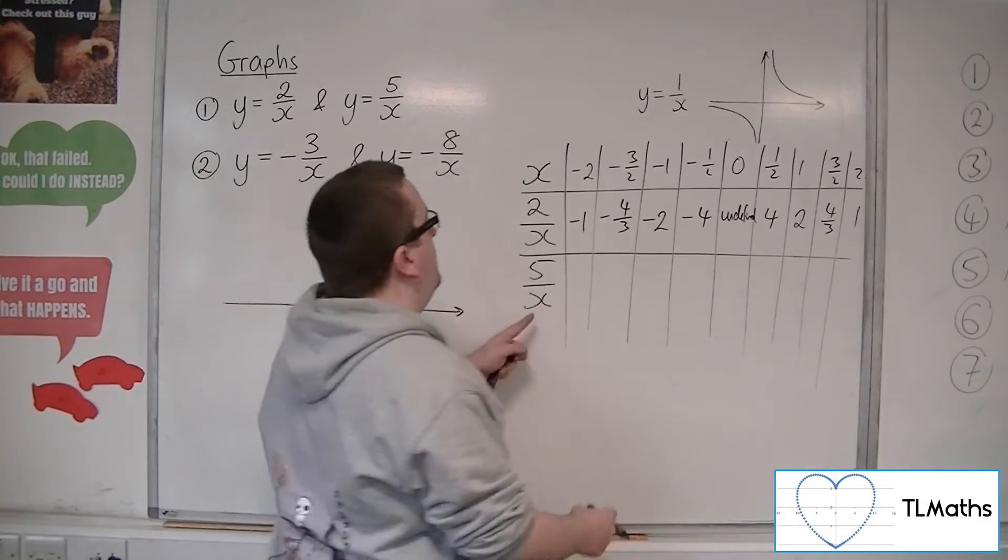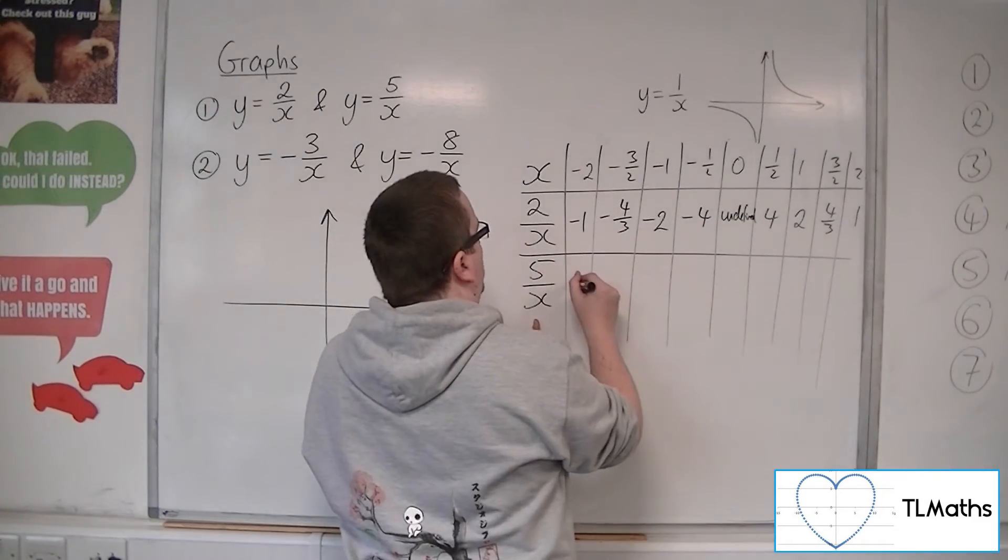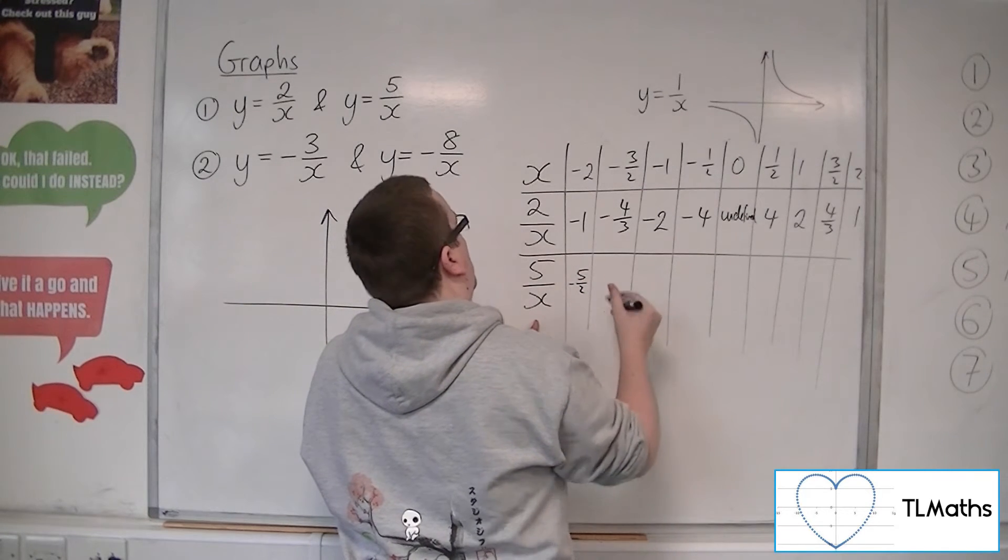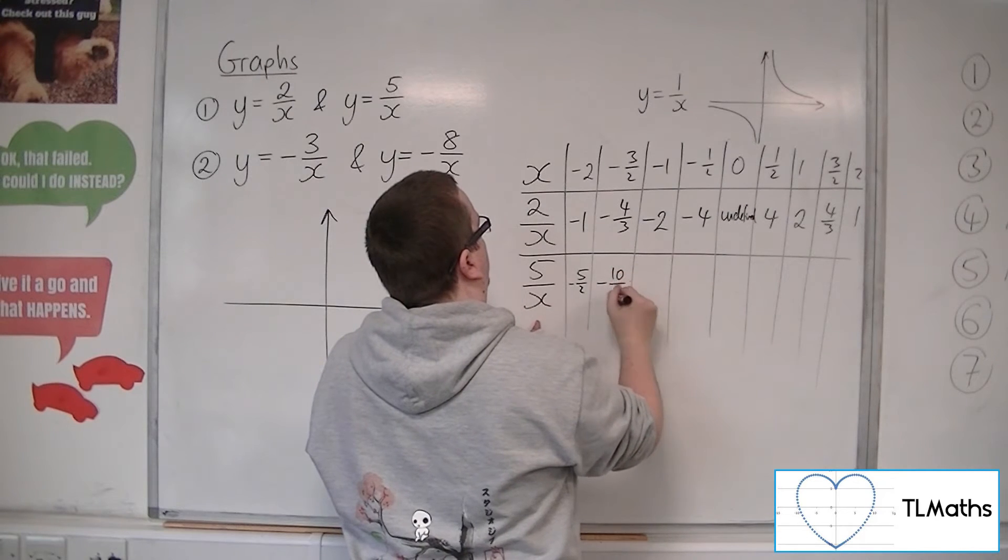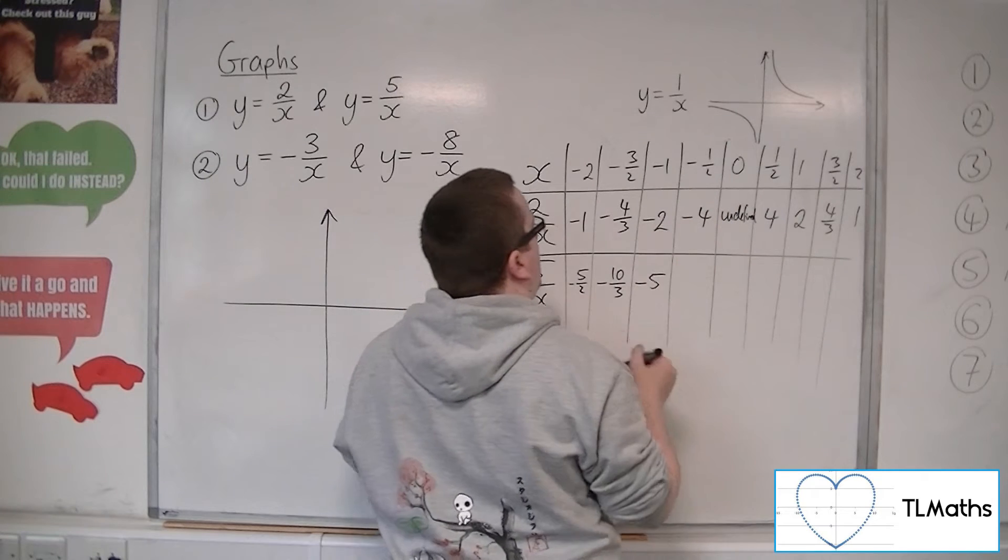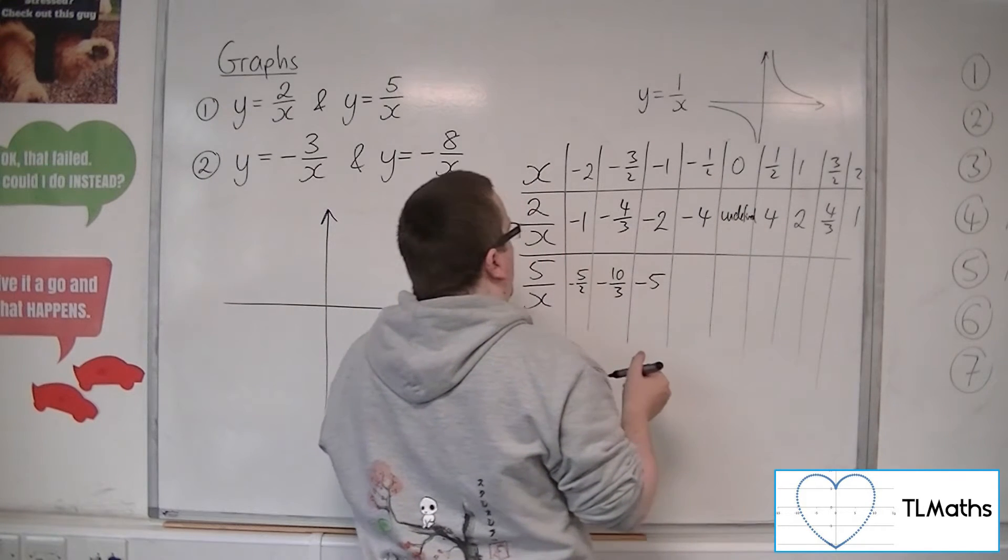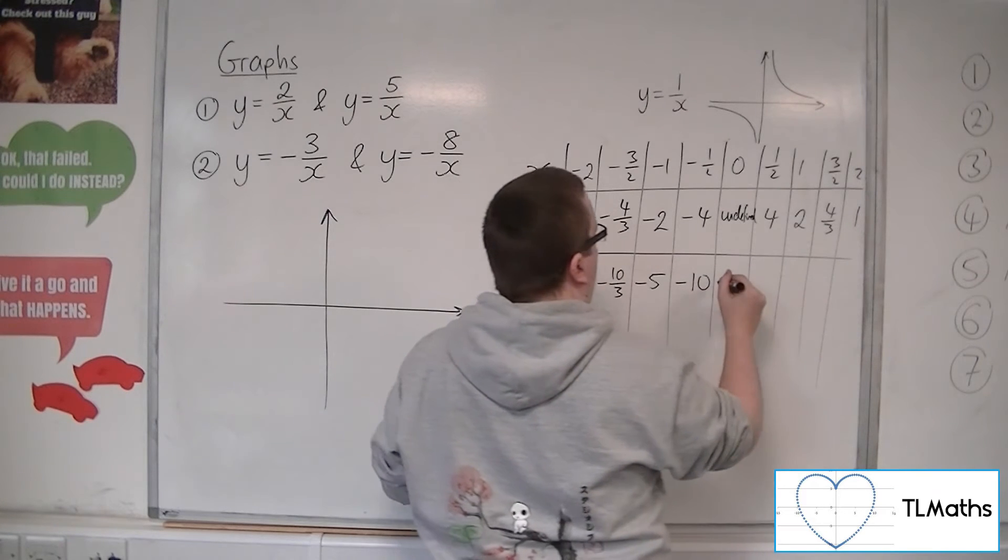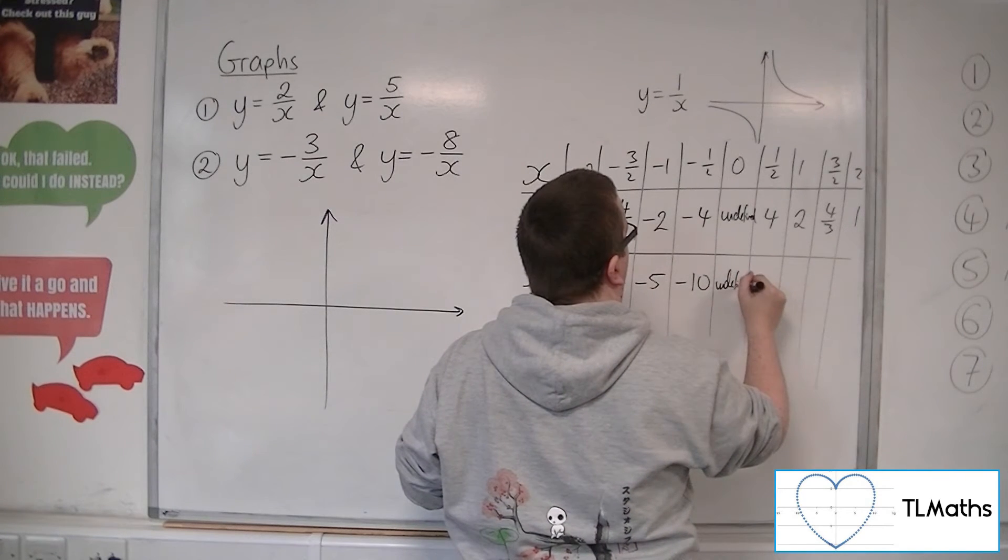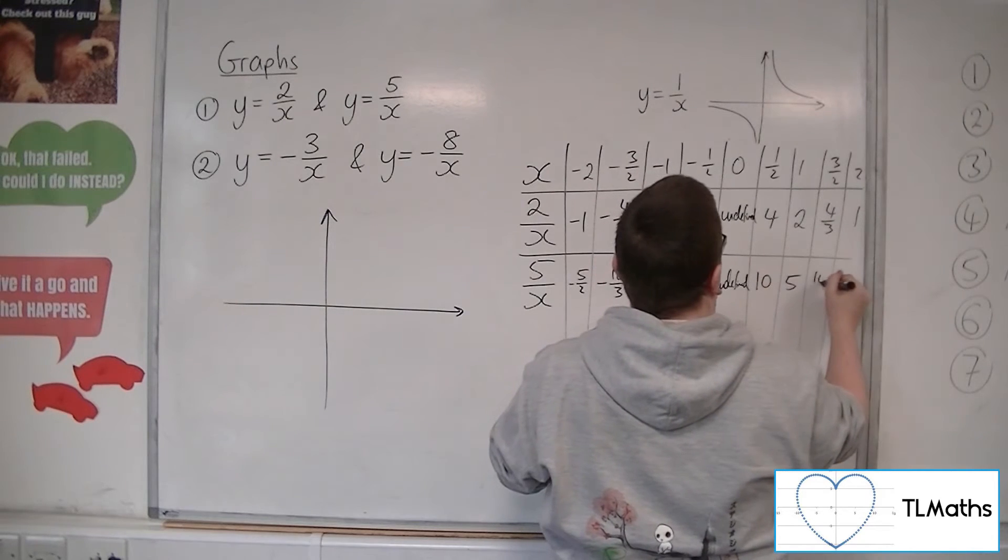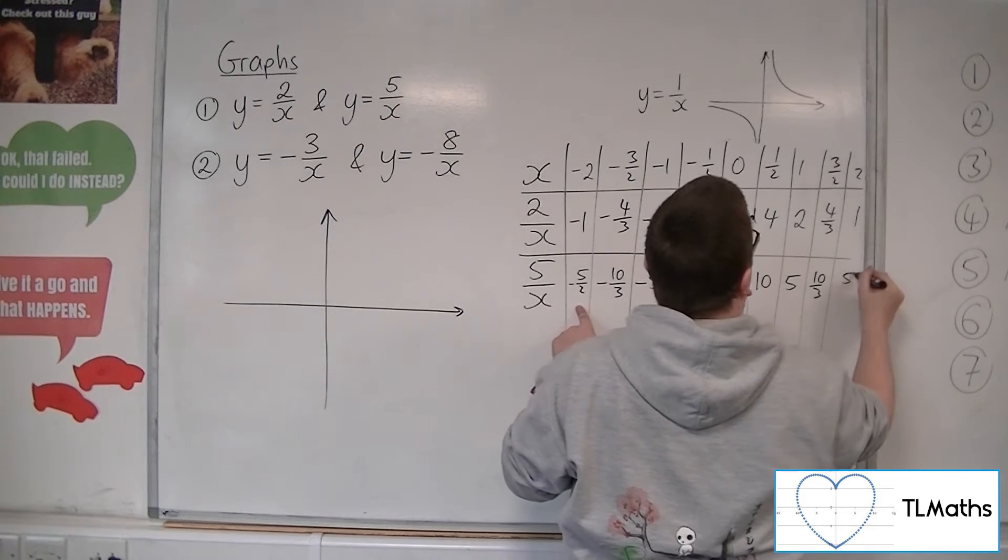And for 5 over x, we'll have 5 over minus 2, so minus 5 halves. 5 over minus 3 halves will be minus 10 thirds. 5 over minus 1 is minus 5. 5 over minus 1 half will be minus 10. And then we'll have undefined when we divide by 0, then 10, 5, 10 thirds, and 5 halves.